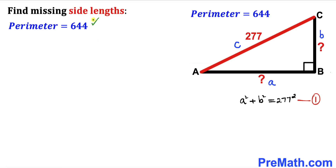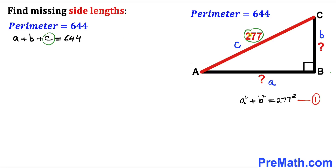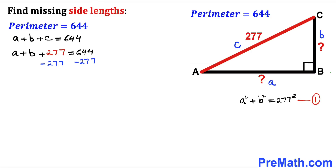Here's our next step. We know that the perimeter of this triangle is 644, and the perimeter means the sum of all sides: a plus b plus c equals 644. We know our c value is 277, so I'm going to replace c by 277. Subtracting 277 from both sides, our a plus b value turns out to be simply 367. Let me call this equation number two.